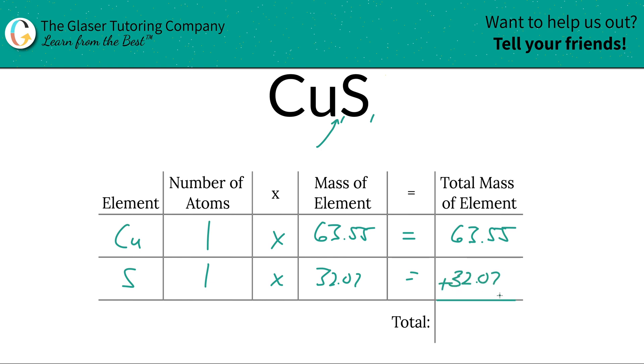And then if we want to find the total mass of the entire compound, which is what we're trying to do here, we're going to simply add them together. So this works out to be 95.62.